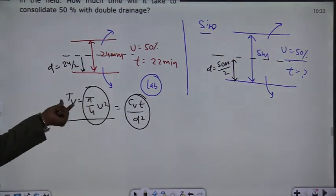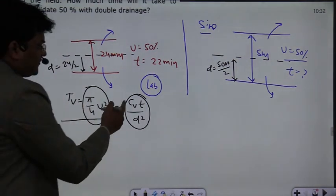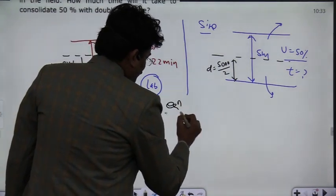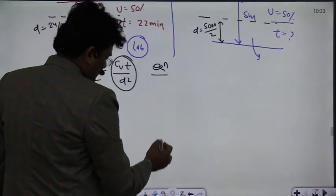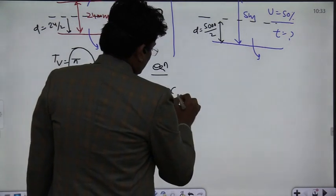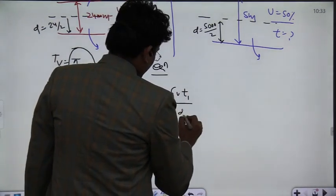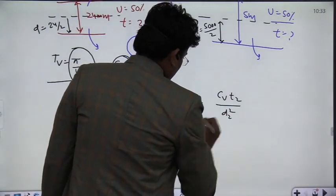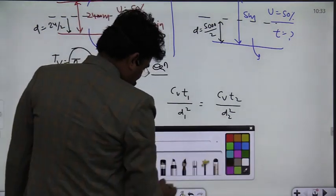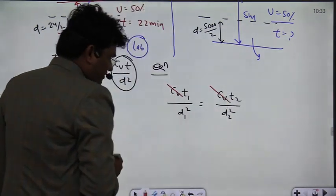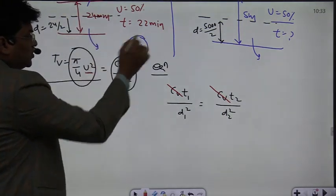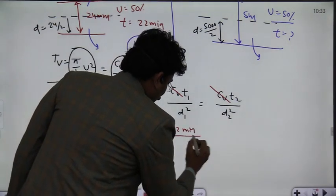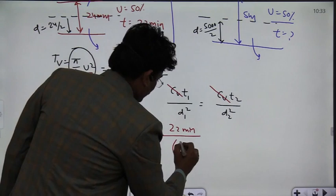When you talk about the field, then you have the d value, this will be taken as 5 meter divided by 2. So in both cases, the value of u is 50% and the coefficient of consolidation is a soil property. So the equation is: cv multiplied by t1 divided by d1 square equals cv times t2 divided by d2 square. It is the same time factor because the time factor depends on u and in both cases it is the same.